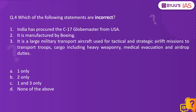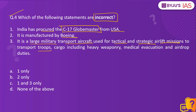The fourth question: Which of the following statements are incorrect? Statement 1: India has procured the C-17 Globemaster from the United States. Statement 2: It is manufactured by Boeing. Statement 3: It is a large military transport aircraft used for tactical and strategic airlift missions to transport troops, cargo including heavy weaponry, medical evacuation and airdrop duties. All three statements are correct with regard to the C-17 Globemaster, so option D is the right answer, as the question asks to identify incorrect statements.